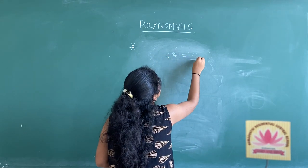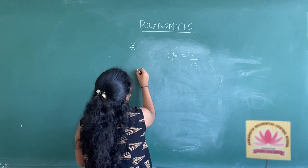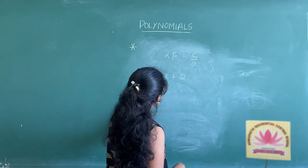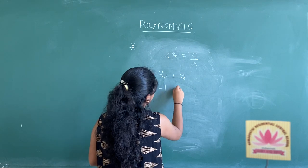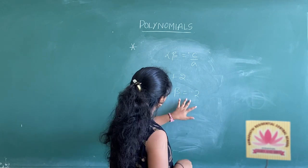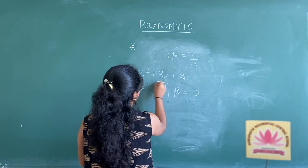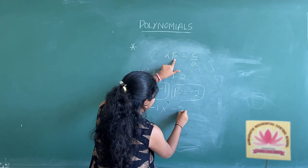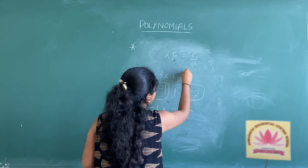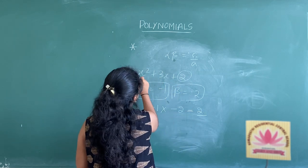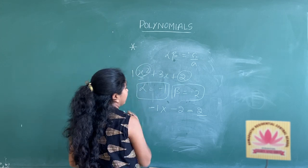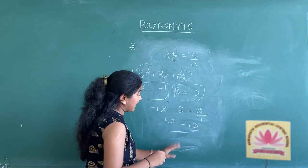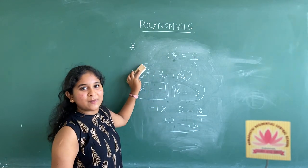For the product of zeros, the formula is alpha times beta equals c by a. Using x squared plus 3x plus 2, alpha equals minus 1 and beta equals minus 2. Alpha times beta equals minus 1 times minus 2 equals plus 2. And c by a equals 2 over 1, which equals 2. LHS equals RHS. This is the relationship between zeros and coefficients — this is the main concept of this chapter.